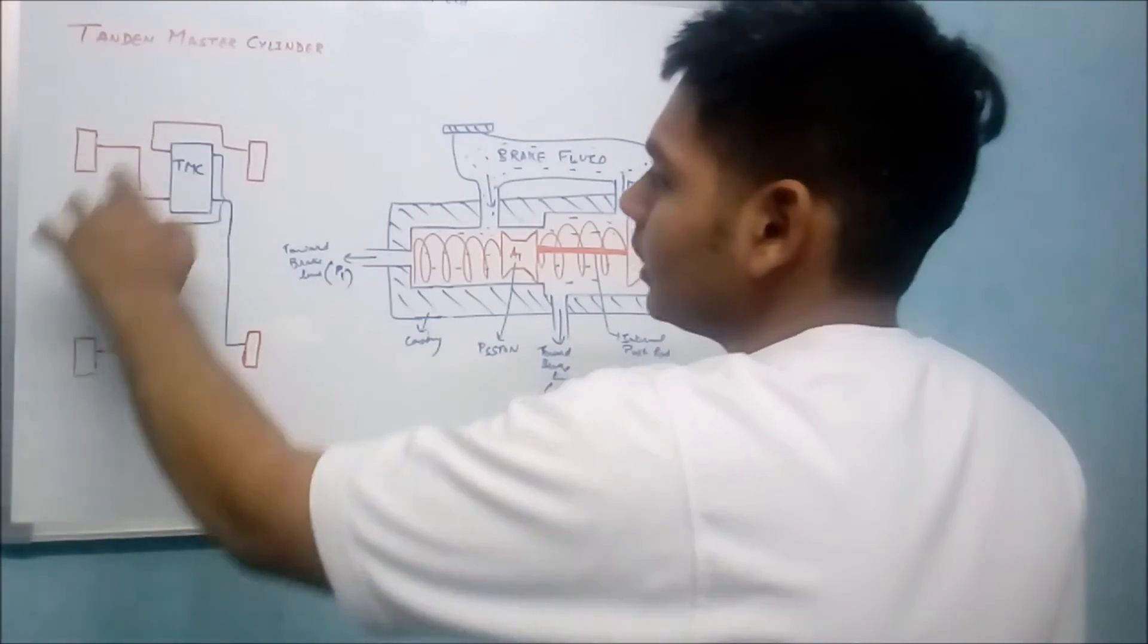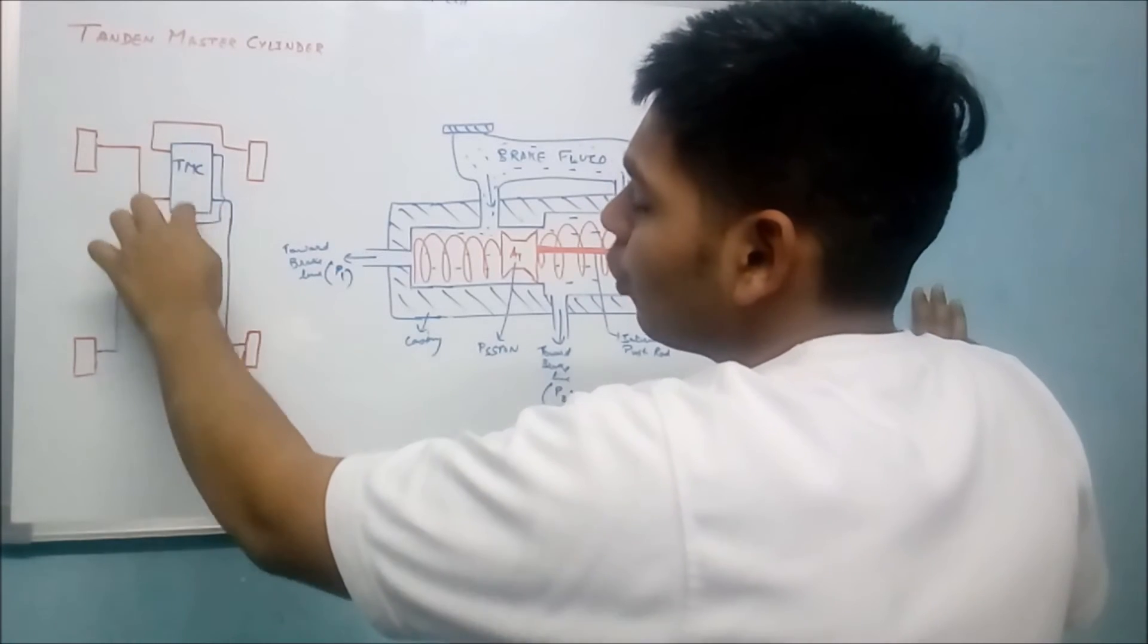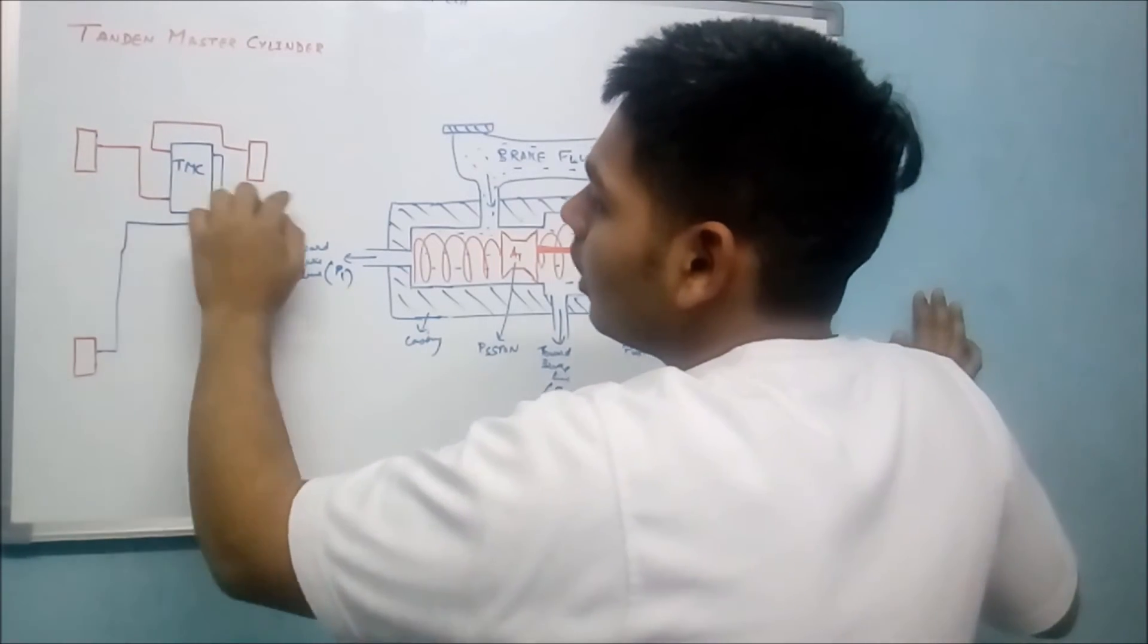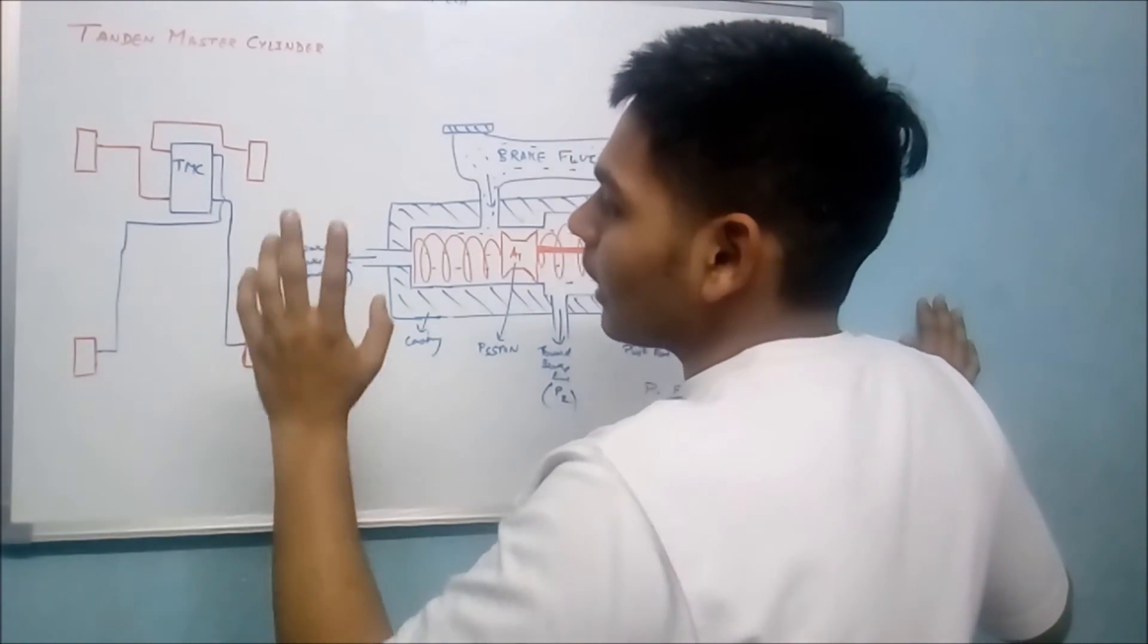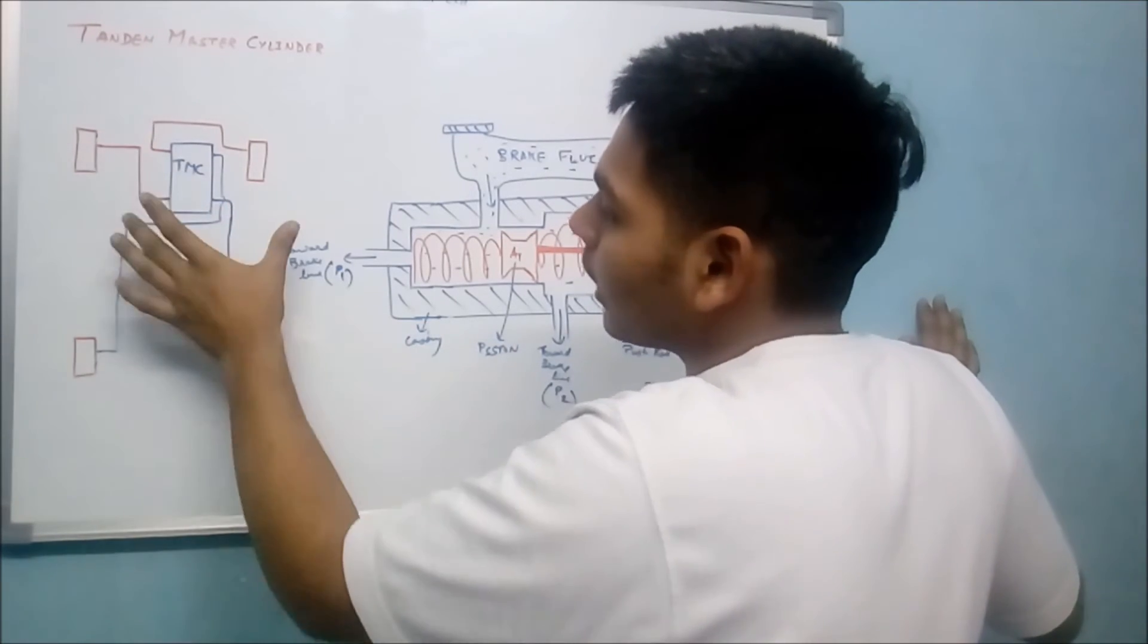Let us come to this connection. Let us assume this is a four-port tandem master cylinder. At the time of braking, the maximum force comes on the front wheel because of weight transfer.